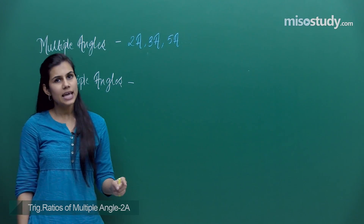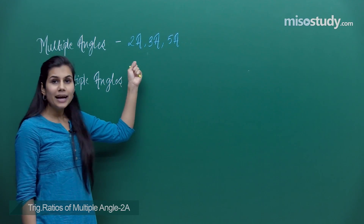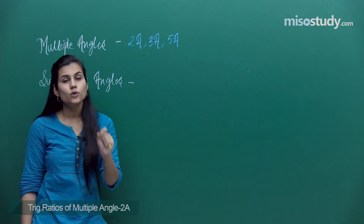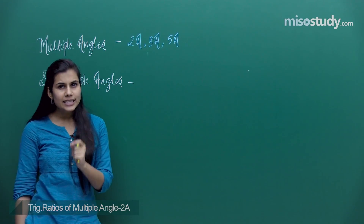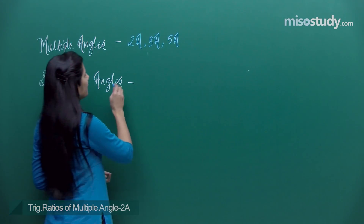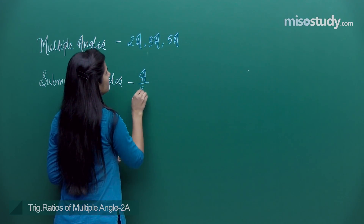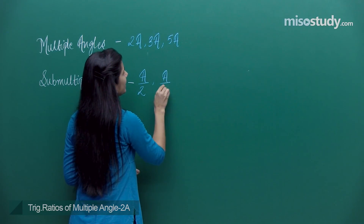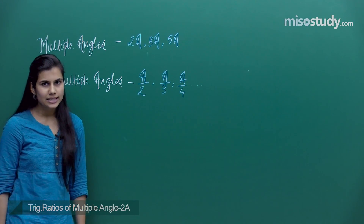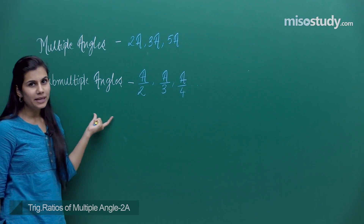Multiple times I'm adding the same angle, resulting in a multiple angle. Twice of a is a plus a, thrice of a is a plus a plus a, and five times a is adding angle a with itself five times. By sub-multiple angles, if a is any angle, then a/2, a/3, a/4 and so on — all these are sub-multiple angles.